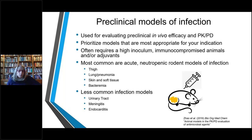Preclinical models of infection are almost always rodent-based and are used to evaluate in vivo efficacy and PKPD. There are various models — you should prioritize those most appropriate for your indication. Because they are models, they often require a high bacterial inoculum, immunocompromised animals, or adjuvants to establish infection. The most common are acute neutropenic rodent models. Thigh and pneumonia are most common, but also skin and soft tissue and bacteremia. Less common models include urinary tract, meningitis, or endocarditis.